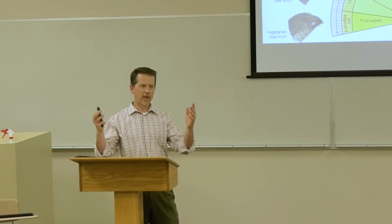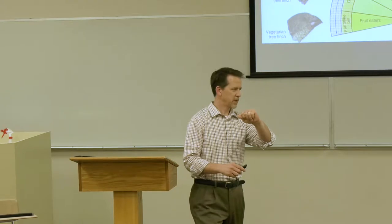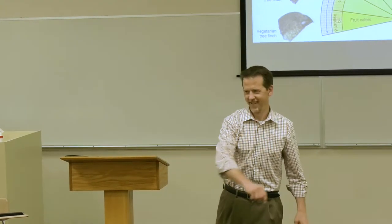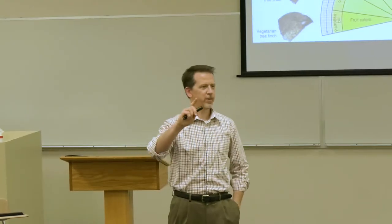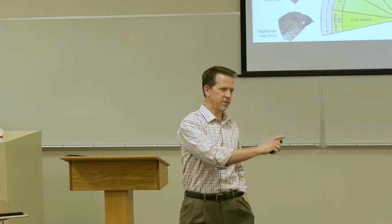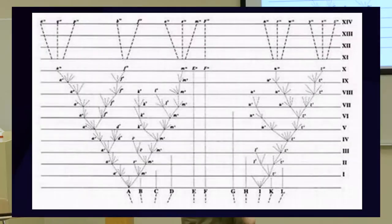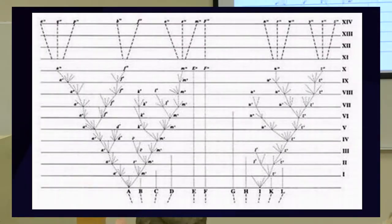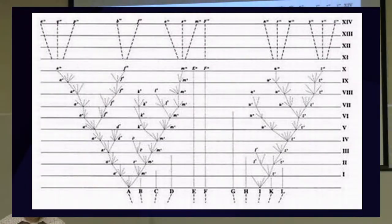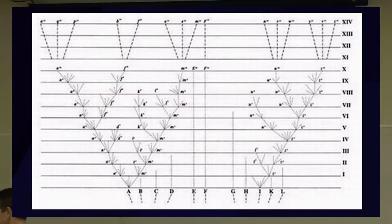So he wrote this book, and in this book, he had one picture. Try writing a science book today with one picture. If you ever have trouble sleeping, start reading On The Origin of Species. That is a snoozer. It is hard reading. But he had this picture in it. This is his tree. It's an evolutionary tree, a portion of it anyway.